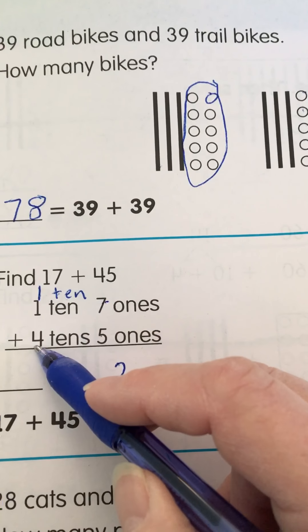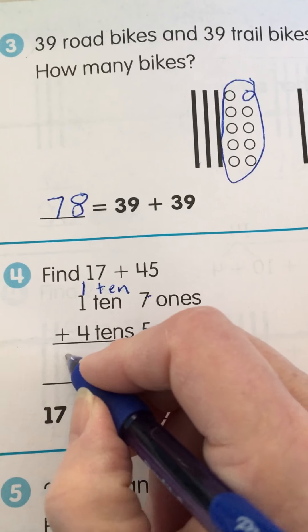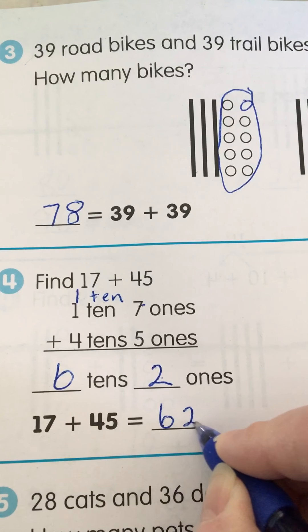Now I can add up my tens. Four, five, six. Six tens and two ones is 62.